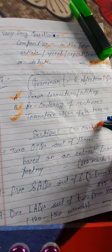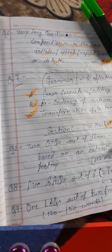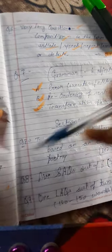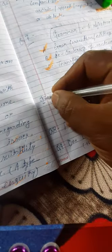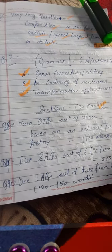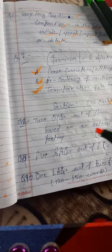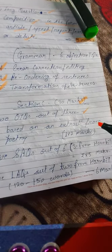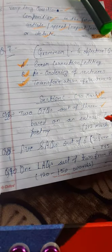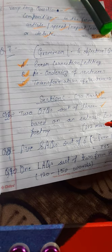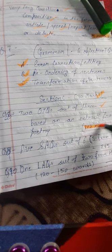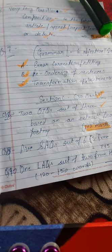Now let's talk about Section C, which is of 30 marks. Question 8 — pay attention, as the question numbering follows a specific series — has two objective type questions out of three, based on extracts from poetry. One or two extracts will be given, and you will have to solve one. There will be three questions and you must attempt two, with one mark per question, giving a total of two marks.